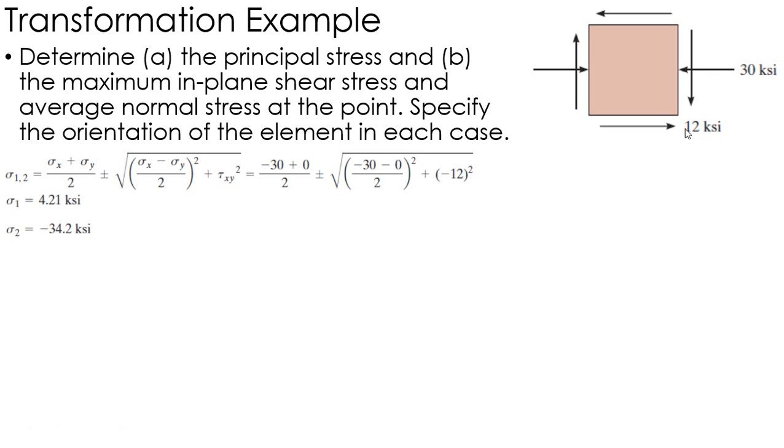From that I can find that my principal stresses are 4.21 ksi and negative 34.2 ksi.